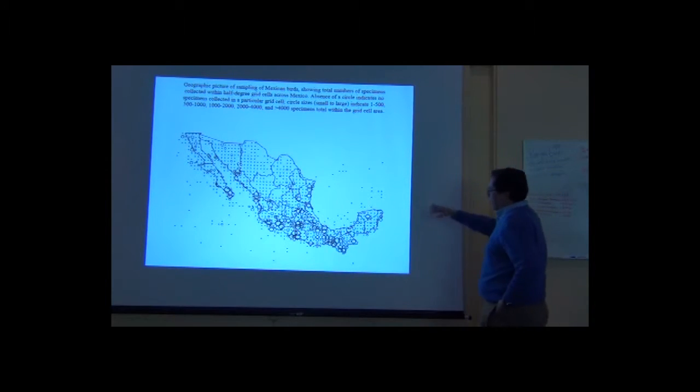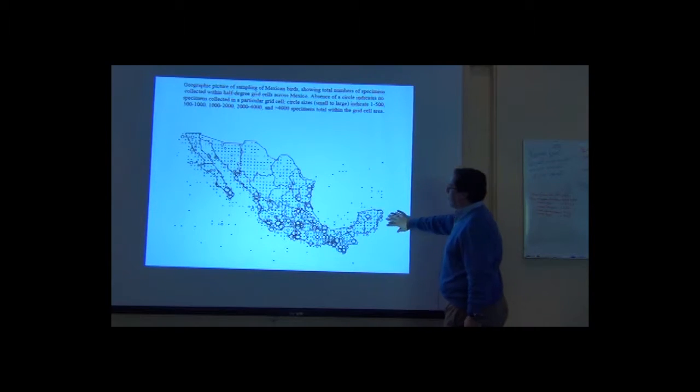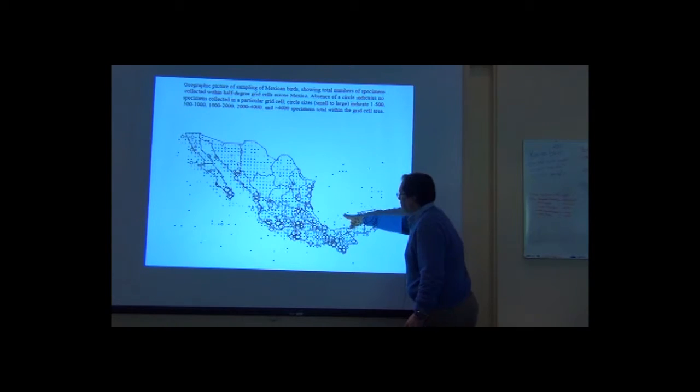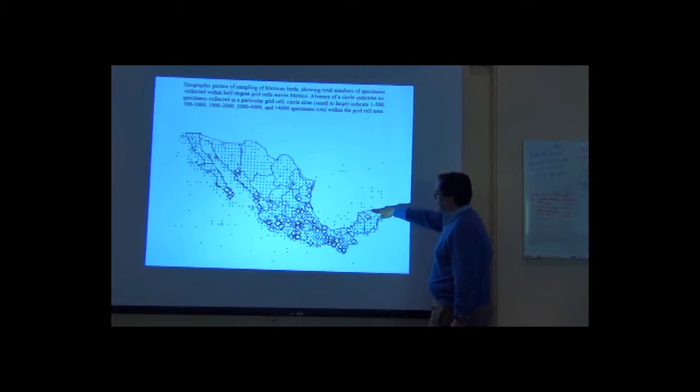For example, this is something that Tom showed you later in a different manner. This is a very old way to look at the intensity of sampling along the geography of Mexico. This was made by quadrants. That is why you see centroids of the data.